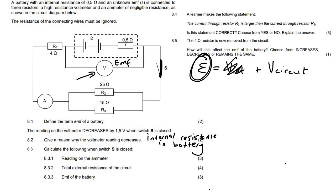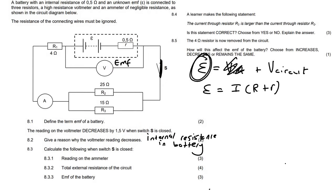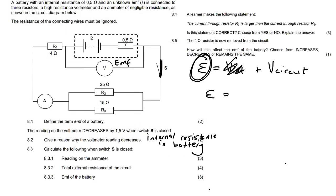Question 8.3.1: the switch is now closed — calculate the reading on the ammeter. We can use the formula I equals V over R, but we need to be careful. We can't directly use it because we don't know the current and we don't know the EMF formula directly. However, there are some interesting ways to approach this.